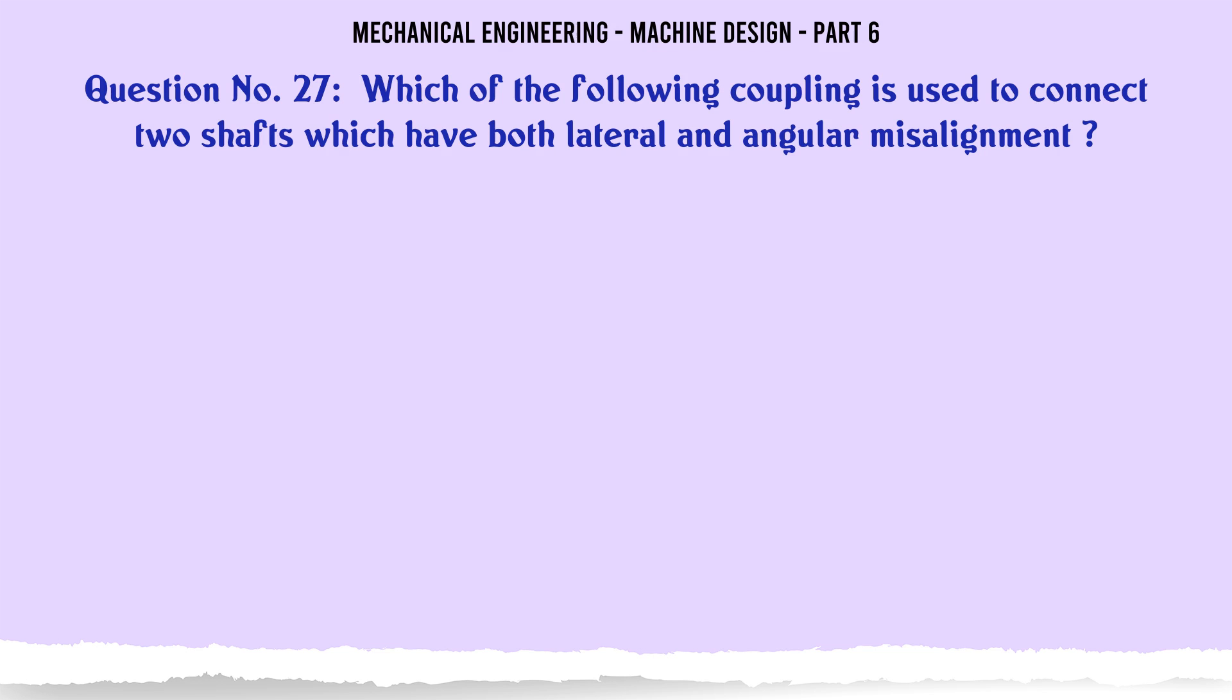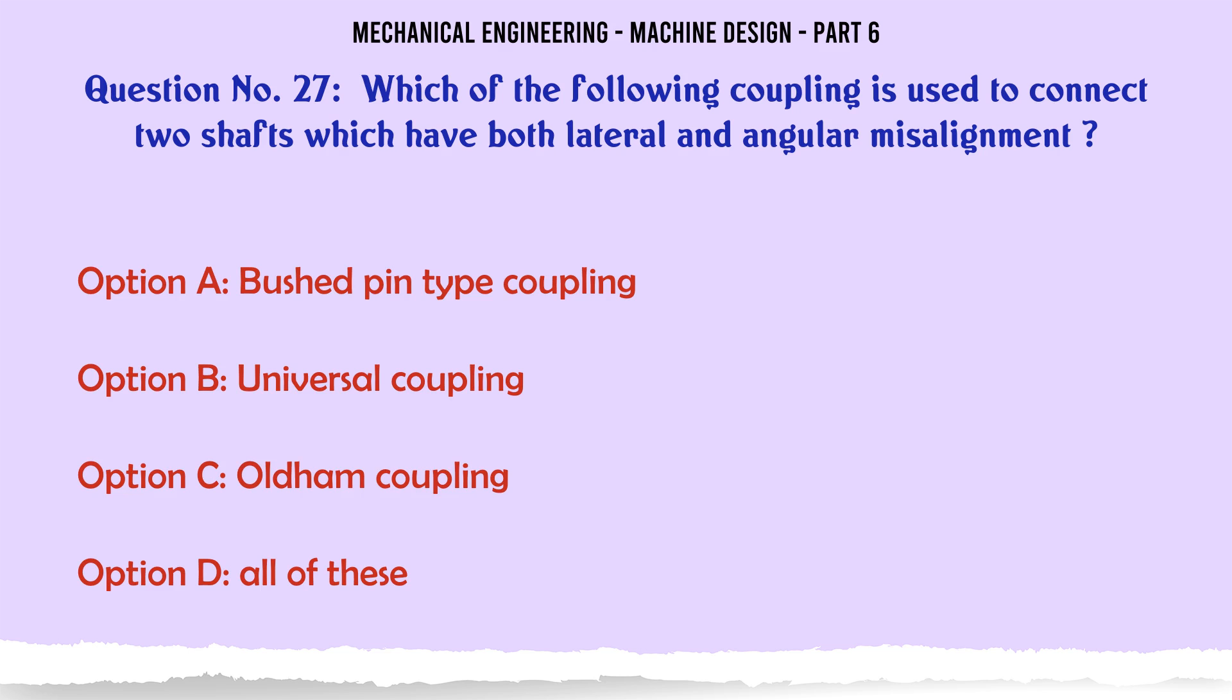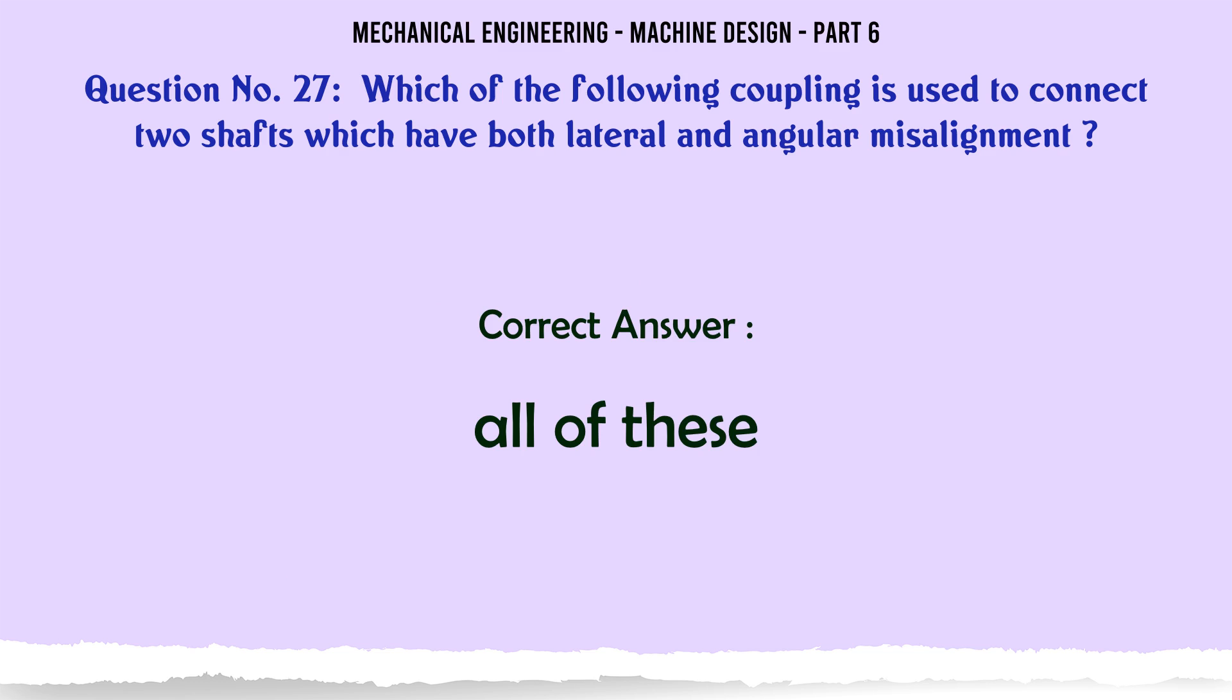Which of the following coupling is used to connect two shafts which have both lateral and angular misalignment: A) bushed pin type coupling, B) universal coupling, C) Oldham coupling, D) all of these. The correct answer is all of these.